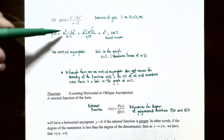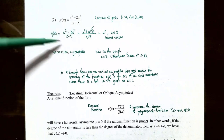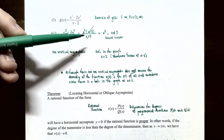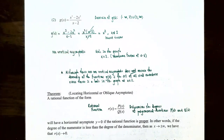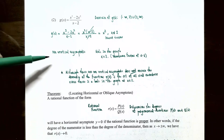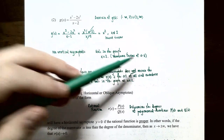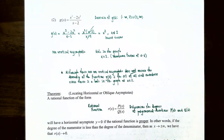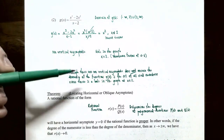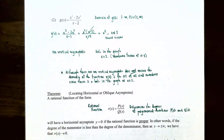Since g(x) simplifies to x squared, there is no denominator other than 1, so there are no vertical asymptotes. However, there is a hole in the graph at x equals 2 because that is where the common factor x minus 2 occurred in both numerator and denominator. The domain of g(x) is negative infinity to 2, union 2 to infinity, with parentheses. Although there are no vertical asymptotes, the domain is still not all real numbers because of the hole at x equals 2.